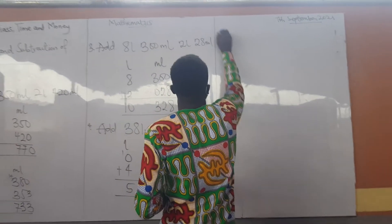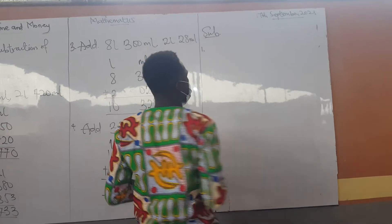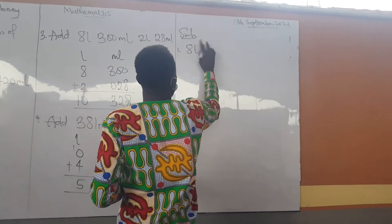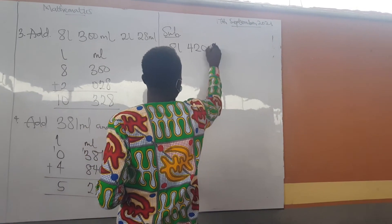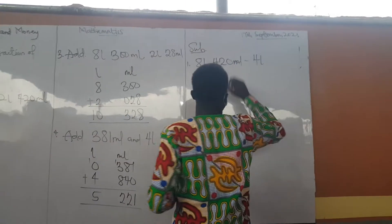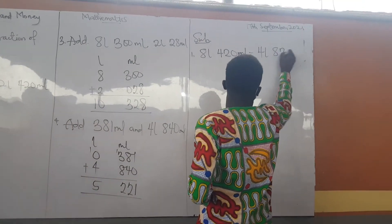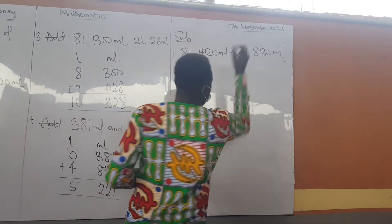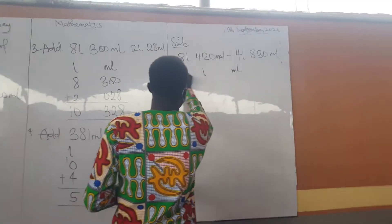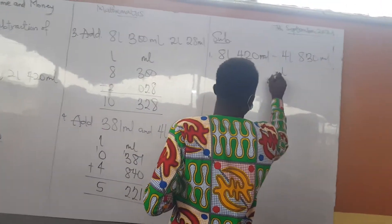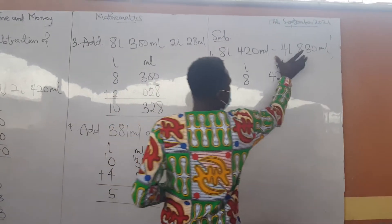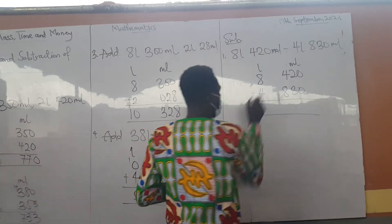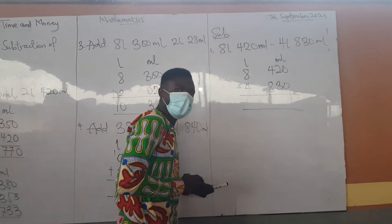Now let's look at the subtraction of capacity. We have 8 liters 420 milliliters minus 4 liters 830 milliliters. We are subtracting. Group liters under liters and milliliters under milliliters. So liters: 8 and 4. Milliliters: 420 and 830. We have to write the subtraction sign to show that we are subtracting.